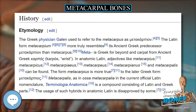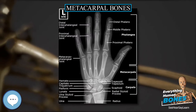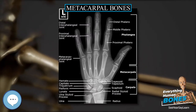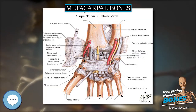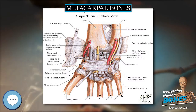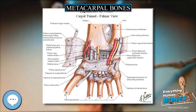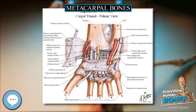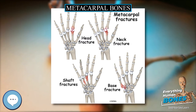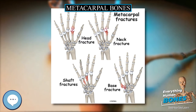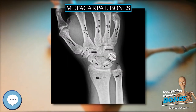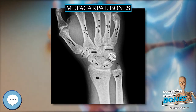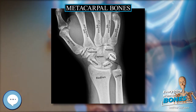The dorsal surface is broad and flat and supports the tendons of the extensor muscles. The volar surface is grooved in the middle line for the passage of the flexor tendons, and marked on either side by an articular eminence continuous with the terminal articular surface. The neck, or subcapital segment, is the transition zone between the body and the head.